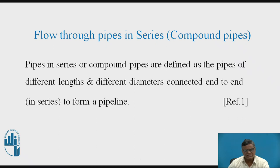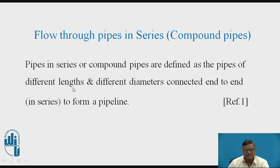Now let us see firstly the pipes in series. These are also named as compound pipes. Pipes in series or compound pipes are defined as the pipes of different lengths and different diameters connected end to end in series, that is, to form a pipeline.